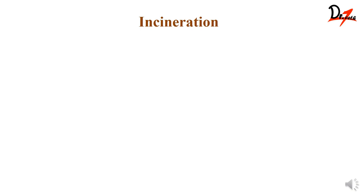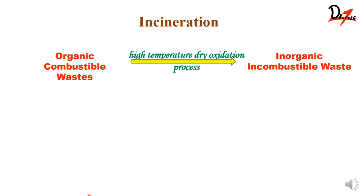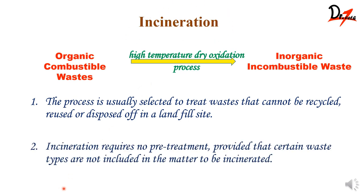We need to process waste to make it less harmful. One process is incineration. In incineration, organic combustible waste under a high-temperature dry oxidation process gets converted into inorganic incombustible waste. Waste that cannot be recycled, reused, or disposed of in a landfill site is treated using incineration, and no pre-treatment of the waste is required.